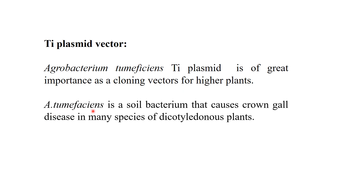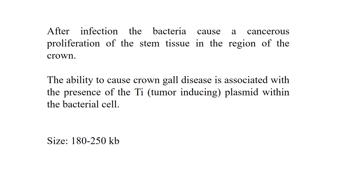Agrobacterium tumefaciens is a soil bacterium that causes crown gall disease in many species of dicotyledonous plants. Crown gall is a tumour formation. After infection, the bacteria cause a cancerous proliferation of the stem tissues in the regions of the crown. The ability to cause crown gall disease is associated with the presence of the Ti plasmid, or tumour inducing plasmid.